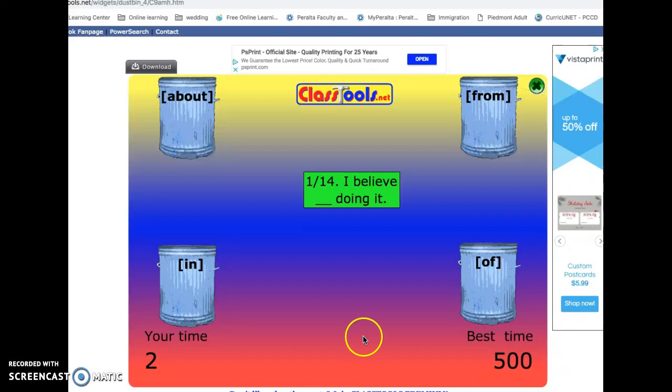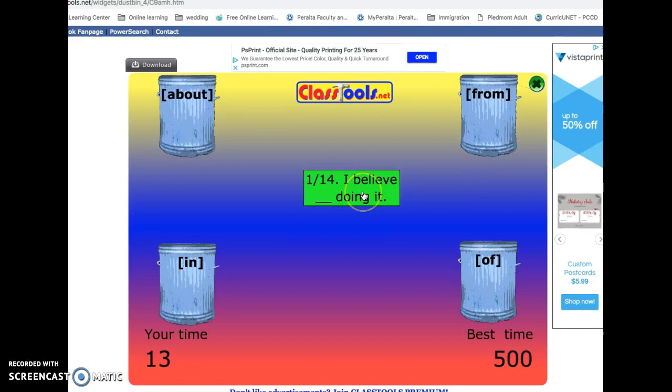And then it will give you a sentence and you have to decide which preposition goes here. So it says I believe blank doing it. So we're practicing our prepositions plus gerunds, but what preposition is it? I believe in, right? So you're going to drag it over here to in, and when you hear that sound, you know you did it right.